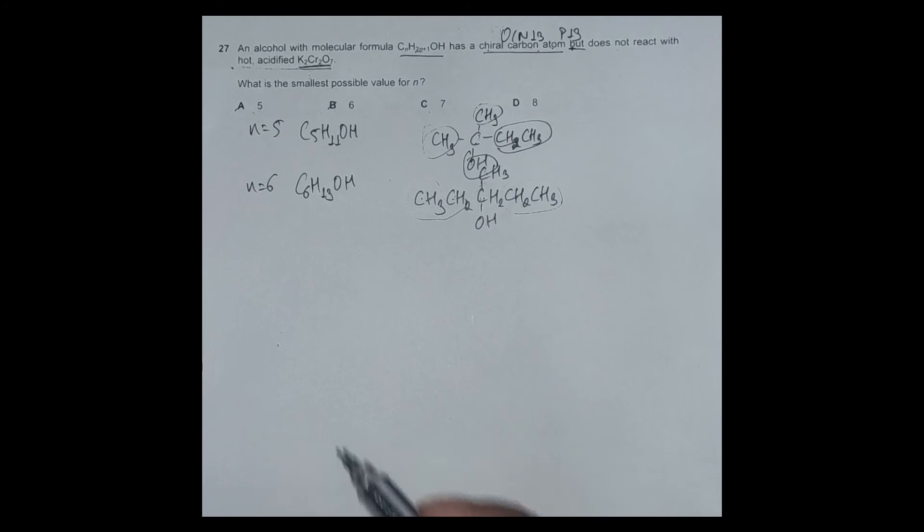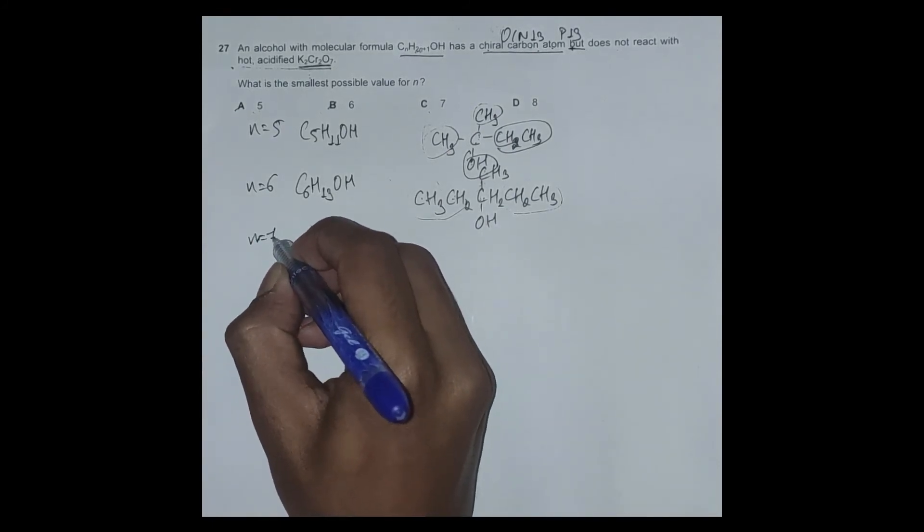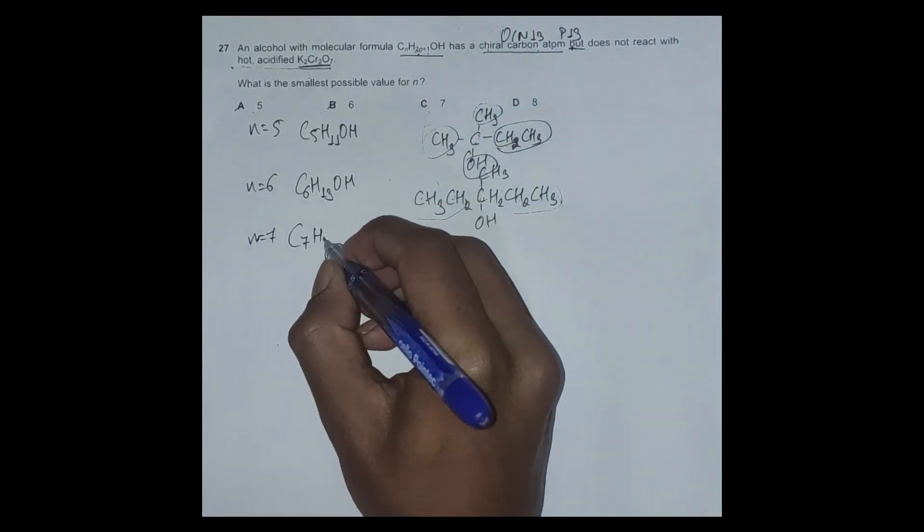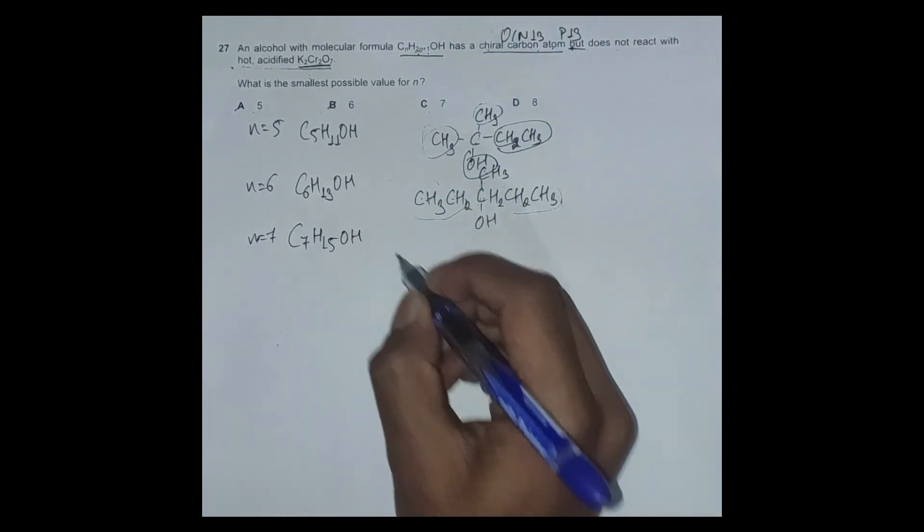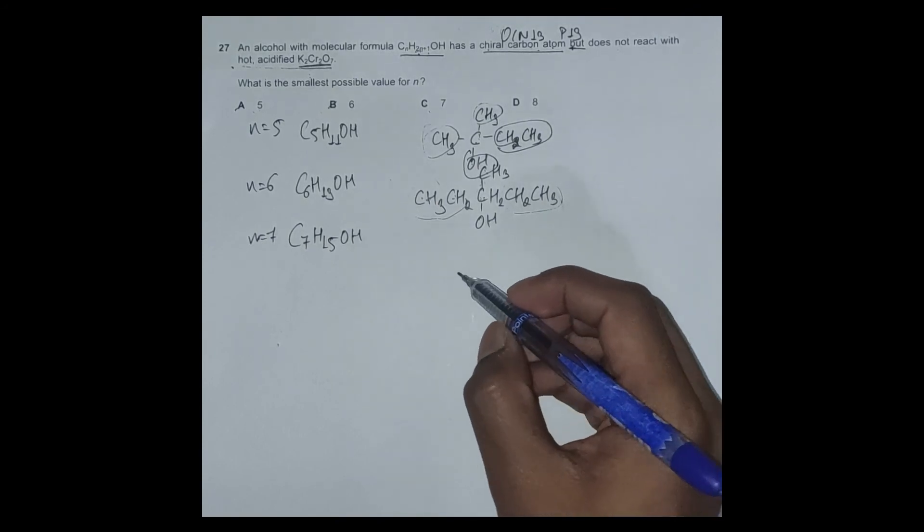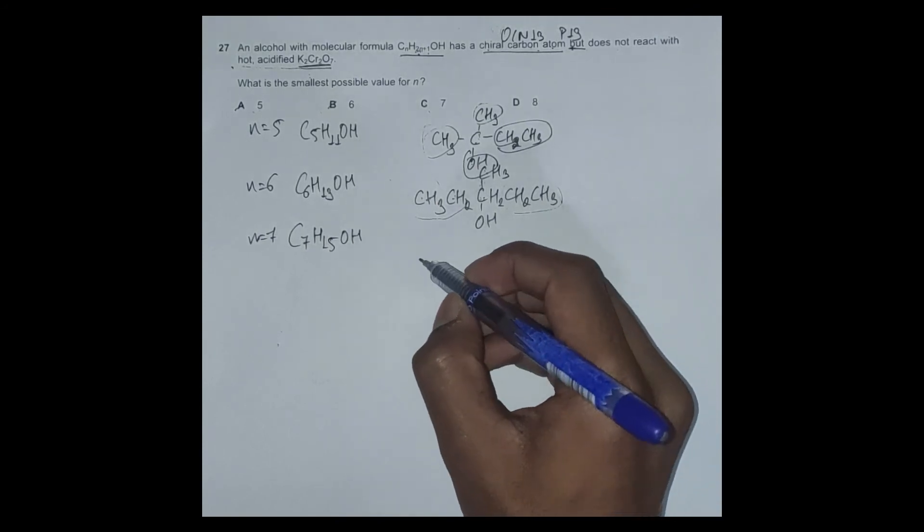So it should either be option C or D. When we check for n equals 7, we have C7H15OH.